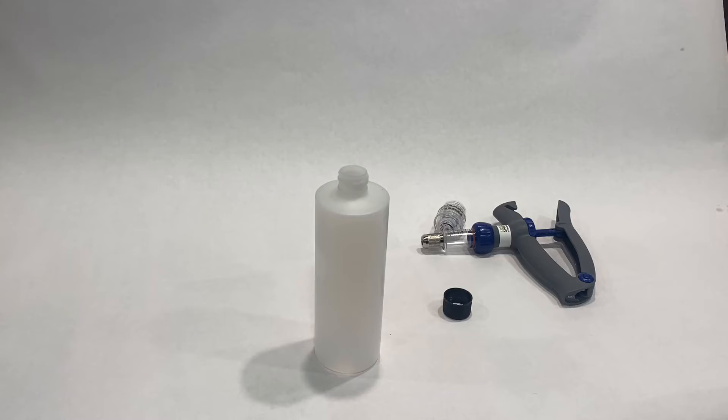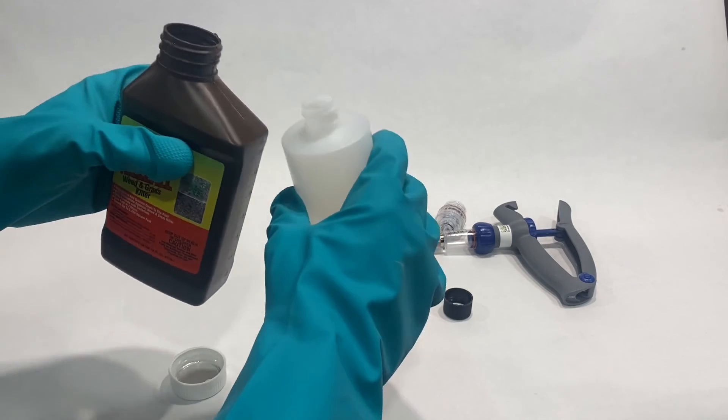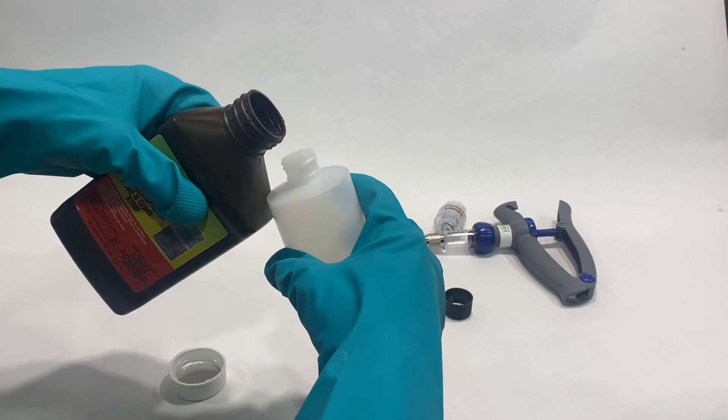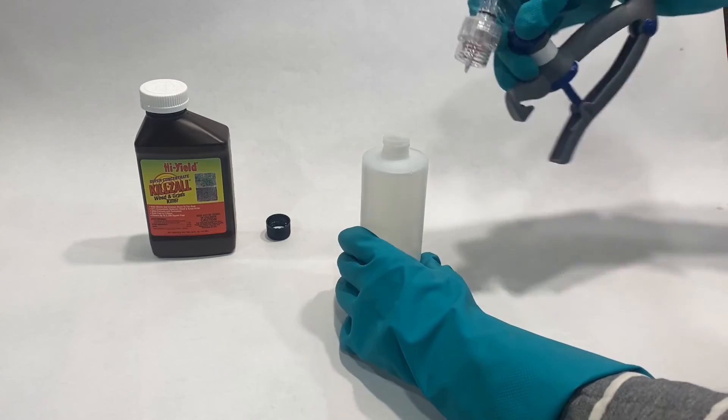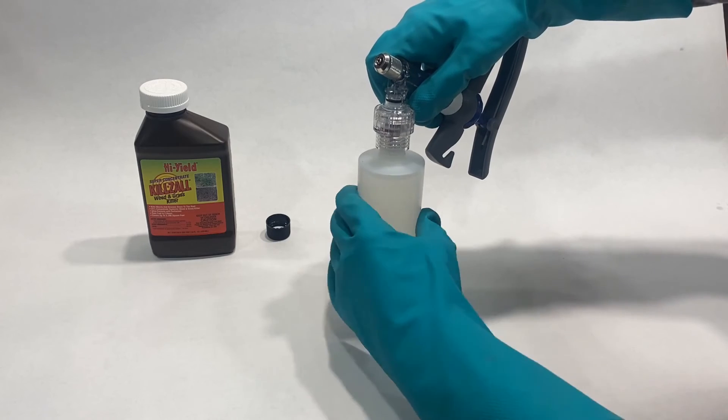Once you have set the dosage, you can fill the reservoir bottle. Notice in this video clip the side of the herbicide bottle from which I am pouring the herbicide. This may seem counterintuitive, but will give you a cleaner pour if you position the bottle this way. Once the bottle is full, place it back on a level surface.